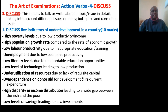Question: Discuss five indicators of underdevelopment in a country. High poverty levels due to low productivity or income. High population growth rate compared to the rate of economic growth. Lower labor productivity due to inappropriate education and training. Unemployment due to low economic productivity. Low literacy levels due to unavailable education opportunities. Low level of technology leading to low production. Under-utilization of resources due to lack of requisite capital. Over-dependence on donor aid for development and recurrent expenditure. High disparity in income distribution leading to a wide gap between the rich and poor. Low levels of savings leading to low investments.